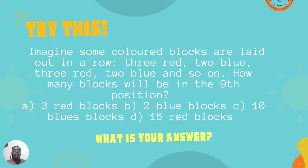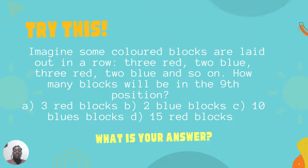Let's look at the example. Imagine some colored blocks are laid out in a row: three red, two blue, three red, two blue, and so on. How many blocks will be in the ninth position? Is it three red blocks, two blue blocks, 10 blue blocks, or 15 red blocks?